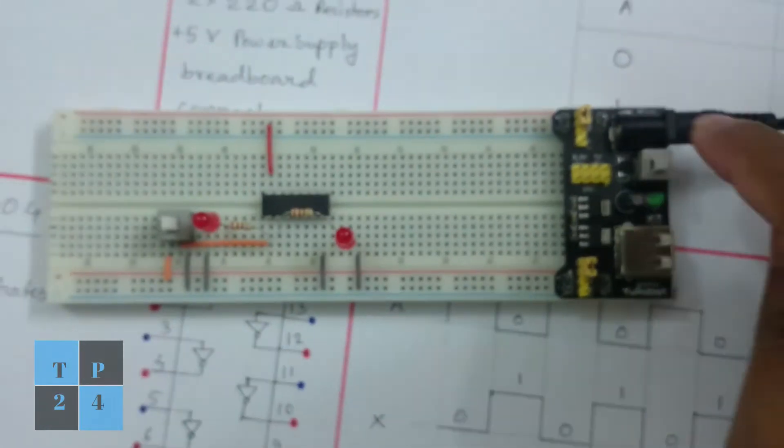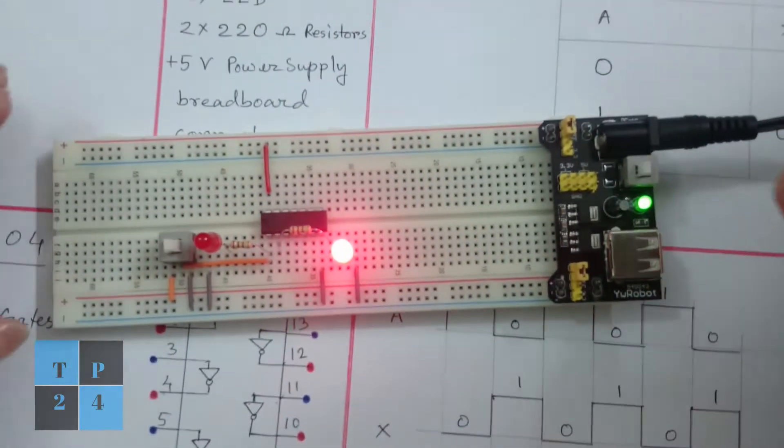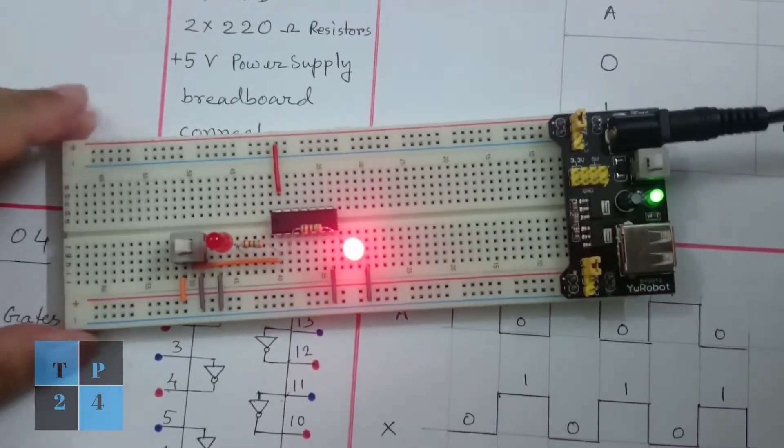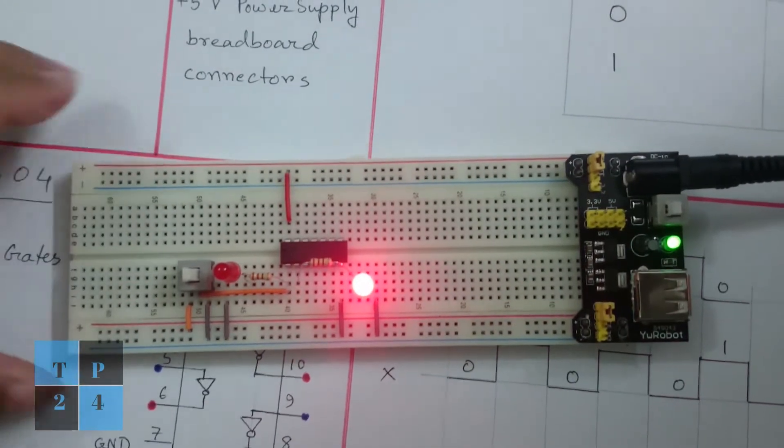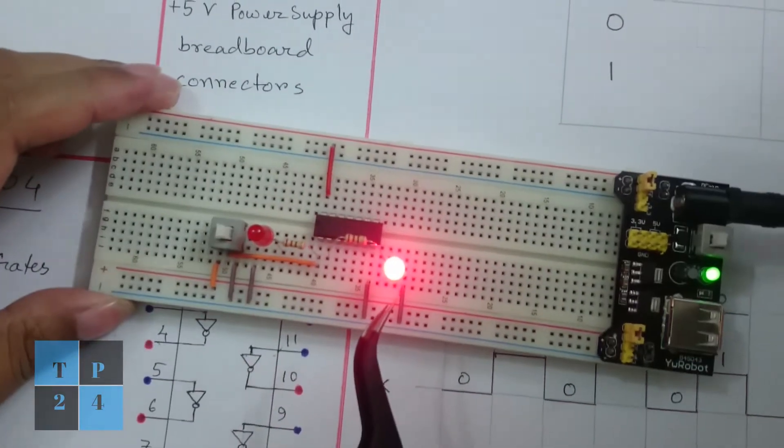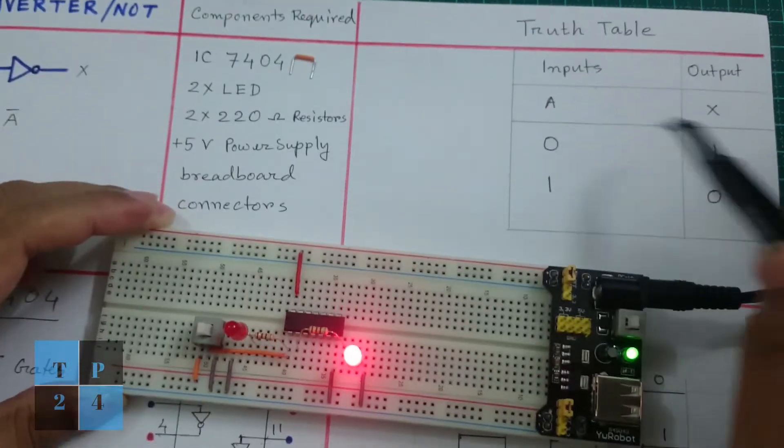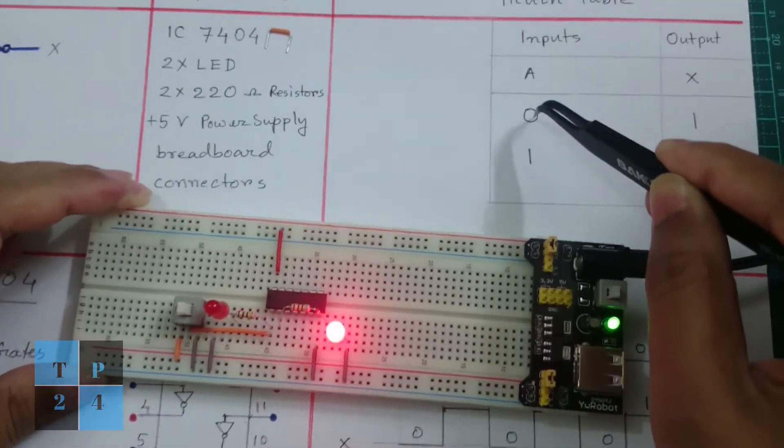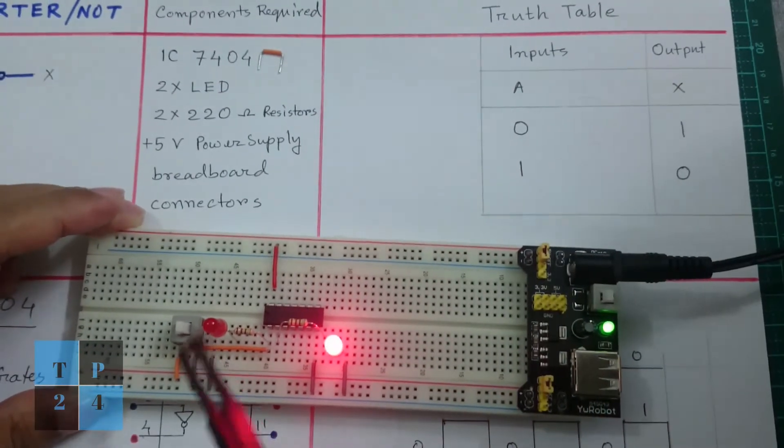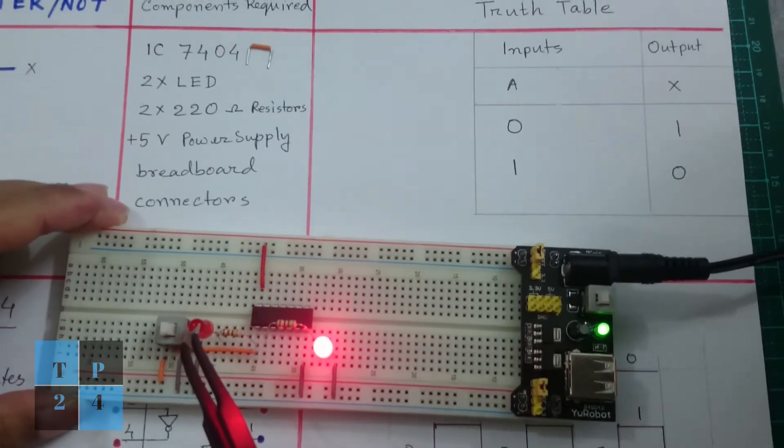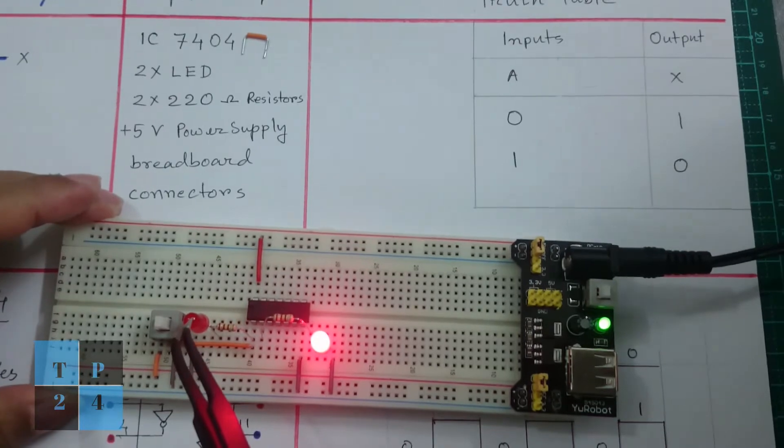I am going to start the breadboard power supply and here you can see the output LED is blinking. That means output is high. When output is high, then input should be low. In our case LED is off, so input is low.